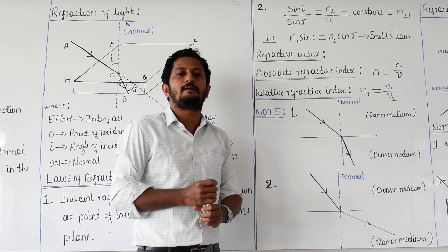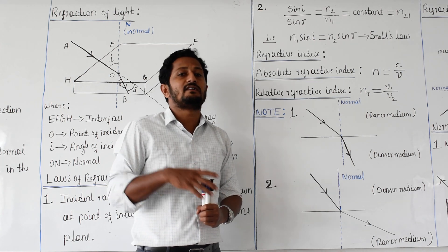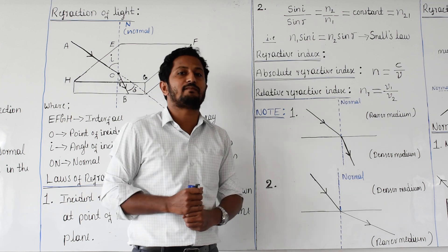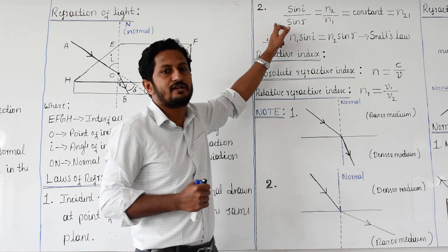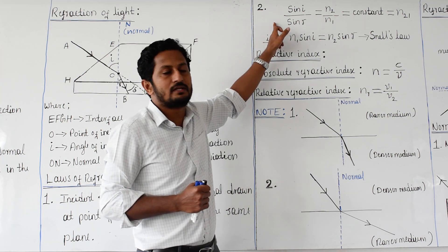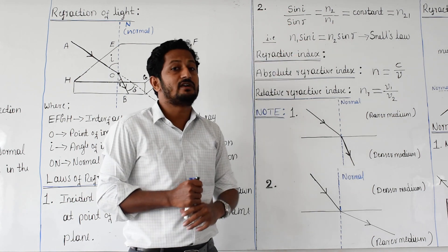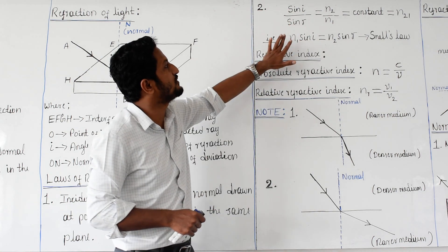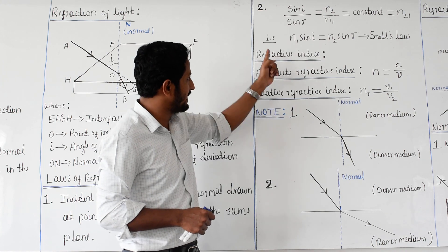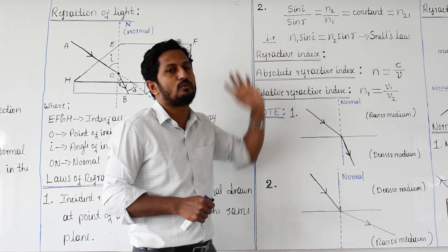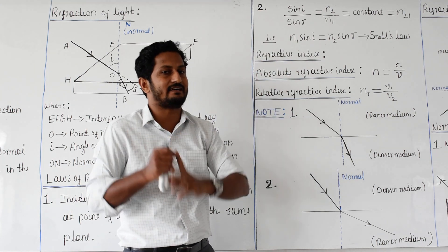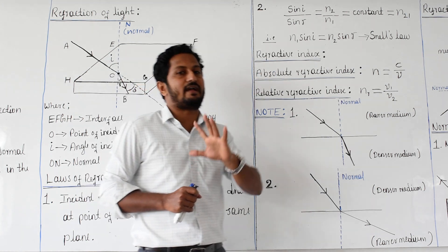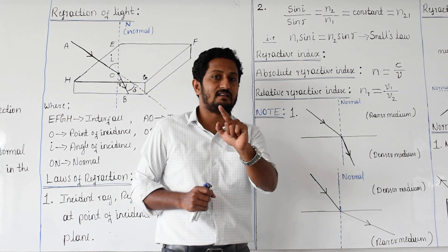N1 sin I equals N2 sin R is a very important equation. In an exam they may ask you to define Snell's law, and at that time you must define this second law. Refractive index is a property of any medium that tells us the speed of light in that medium with respect to another medium.